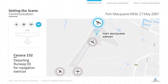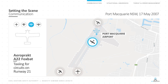The third aircraft is a Cessna 152 departing to the north on a navigation exercise, also using runway 03. The fourth actor is an RA-Aus Foxbat taxiing for circuits on runway 21 — the first chink in the armour. We have three aircraft using runway 03, but the Foxbat, for reasons we'll discuss, has decided to use runway 21.